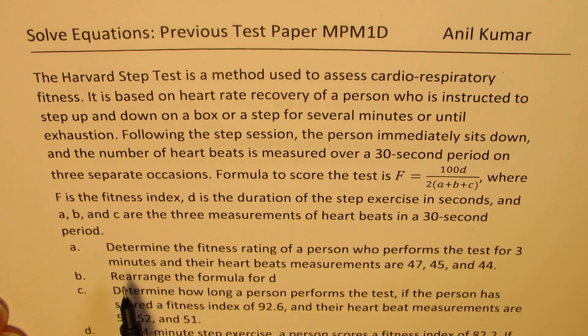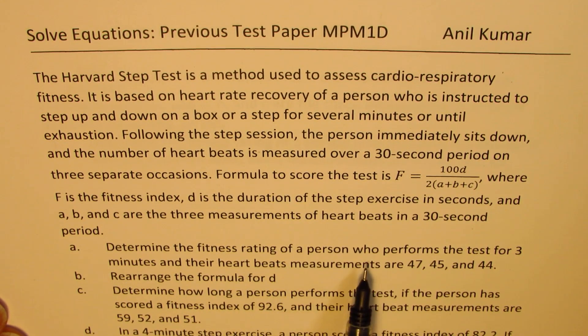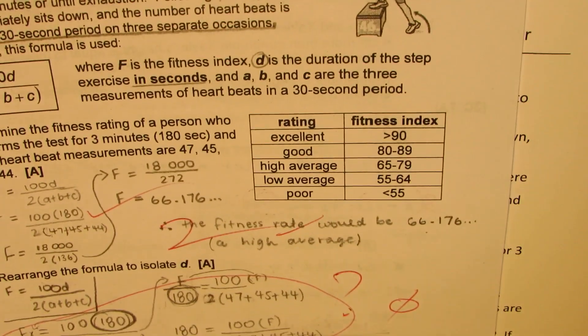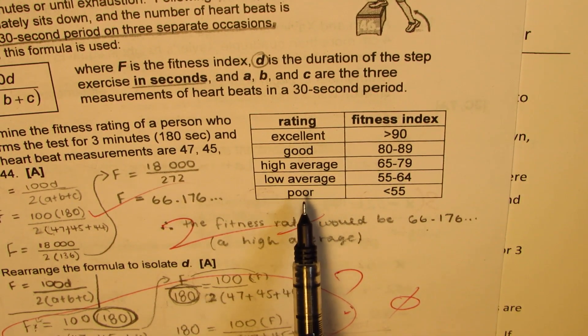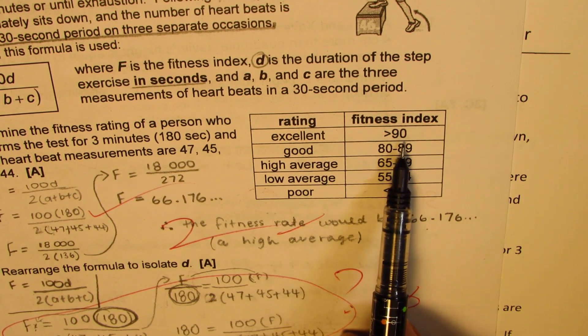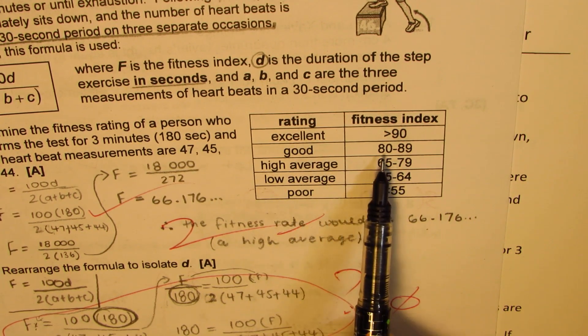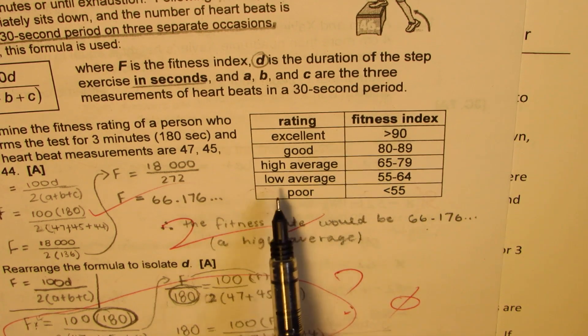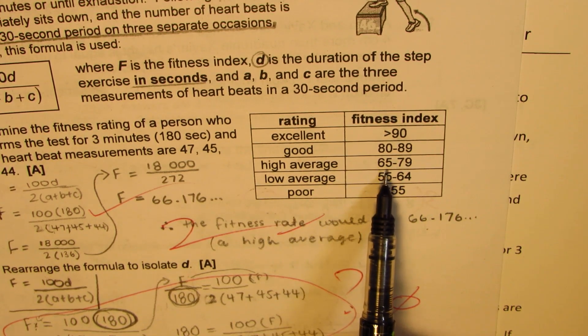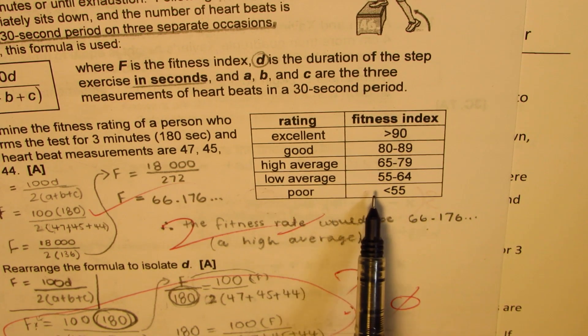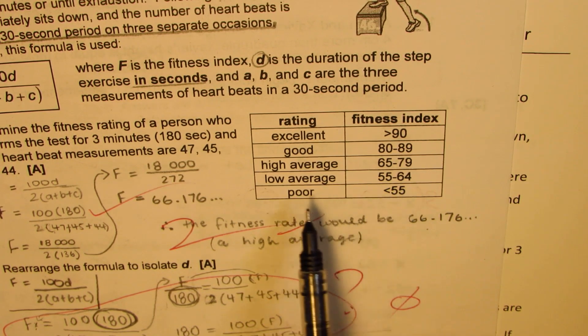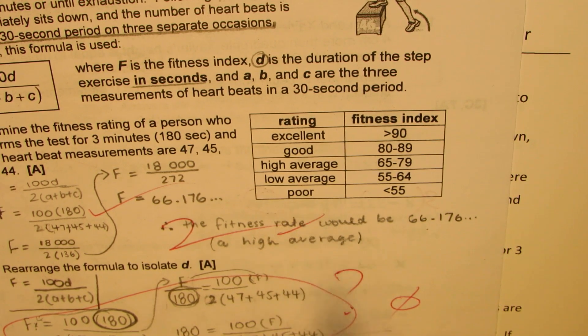The very first test: determine the fitness rating of a person who performs the test for three minutes and their heartbeat measurements are 47, 45 and 44. Some more information about the question is given here. The rating F, if it is greater than 90 then the condition is excellent. If it is between 80 to 89 it is good. For high average the value should be between 65 and 79. For low average it is 55 to 64 and if the value of F is less than 55 then it is poor.